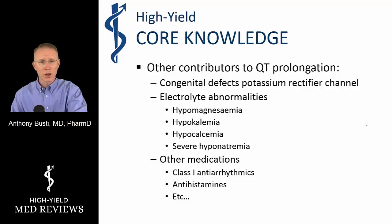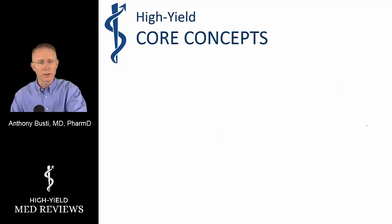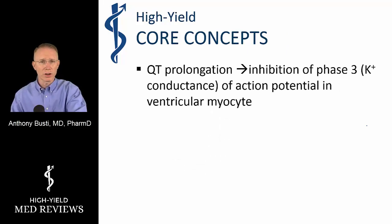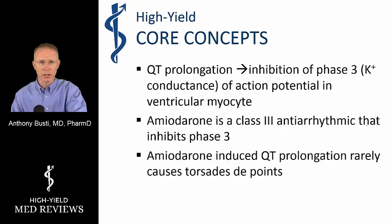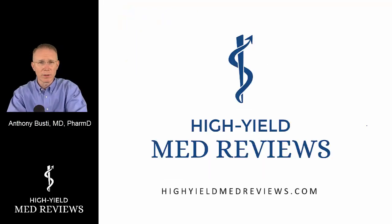To summarize the core concepts: QT prolongation occurs with any medication that inhibits phase III potassium conductance out of the cell, which prolongs repolarization. Amiodarone is a class III antiarrhythmic that inhibits phase III potassium conductance, causing delayed repolarization and delayed relaxation of the ventricular myocardium. Amiodarone-induced QT prolongation, based on current evidence, rarely results in torsades de pointes. This core knowledge is clinically relevant as we try to apply it to clinical practice.